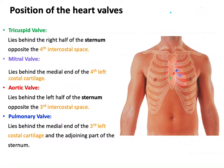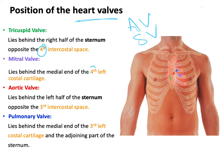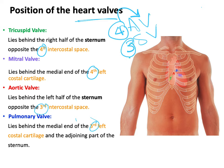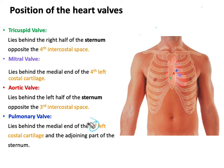Let us look at the surface anatomy of the heart, especially the heart valves. We have AV valves and semilunar valves. I'd like you to keep two numbers in mind: number four and number three. Keep number four for AV valves and number three for semilunar valves. I'm trying to find an easy way to memorize the position of the heart valves.